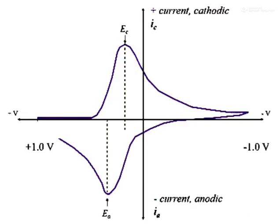In a simple cyclic voltammogram, starting from the initial potential, the potential is decreased and then recovered. While decreasing the potential, the analyte is reduced at a certain point where the maximum number of analyte molecules have been reduced; this potential is called the peak cathodic potential (E_PC). After that, the reduced analyte is oxidized, and the point of maximum oxidation is called the peak anodic potential (E_PA).